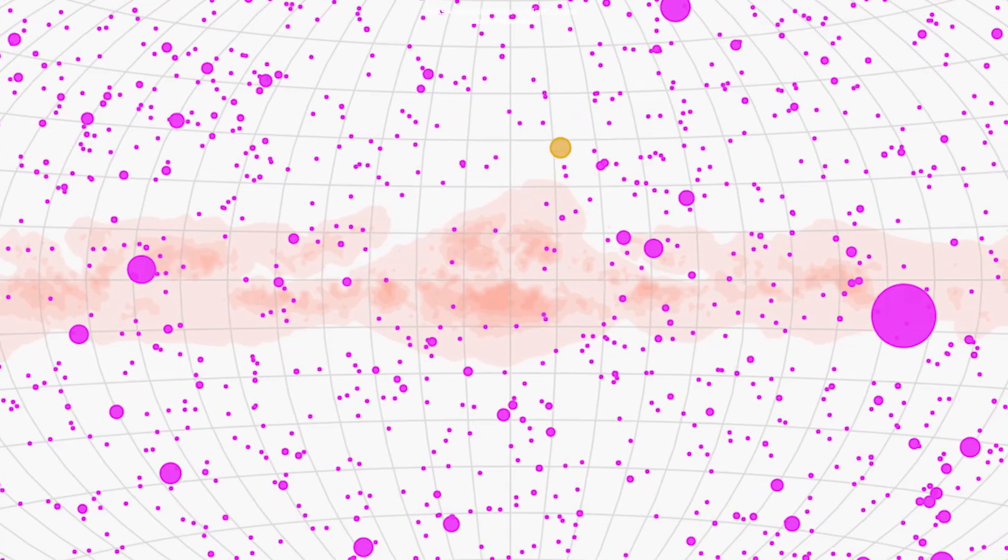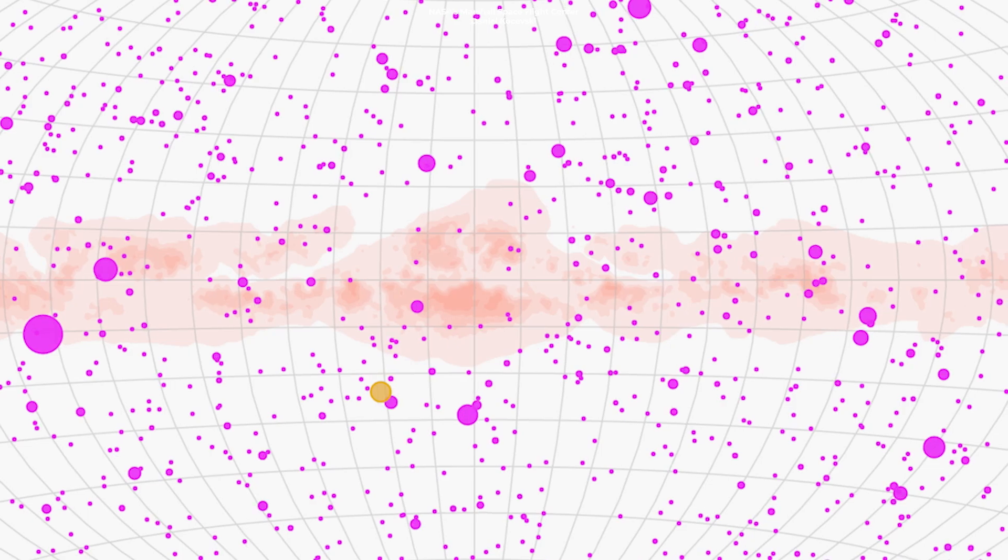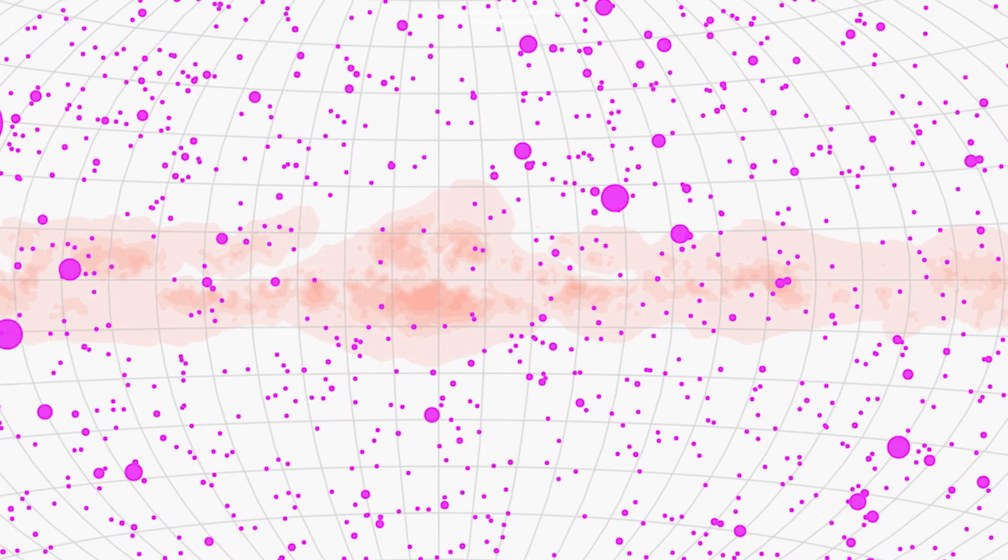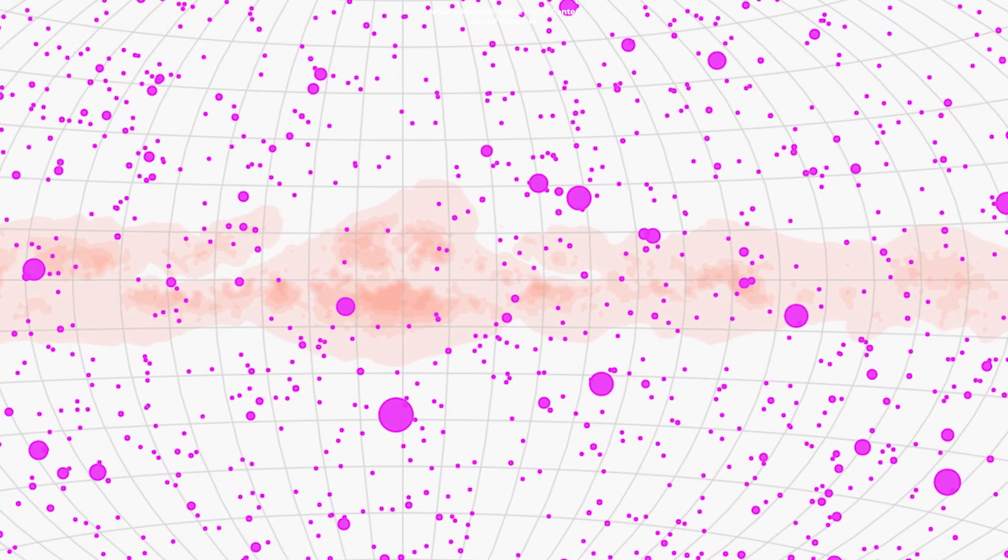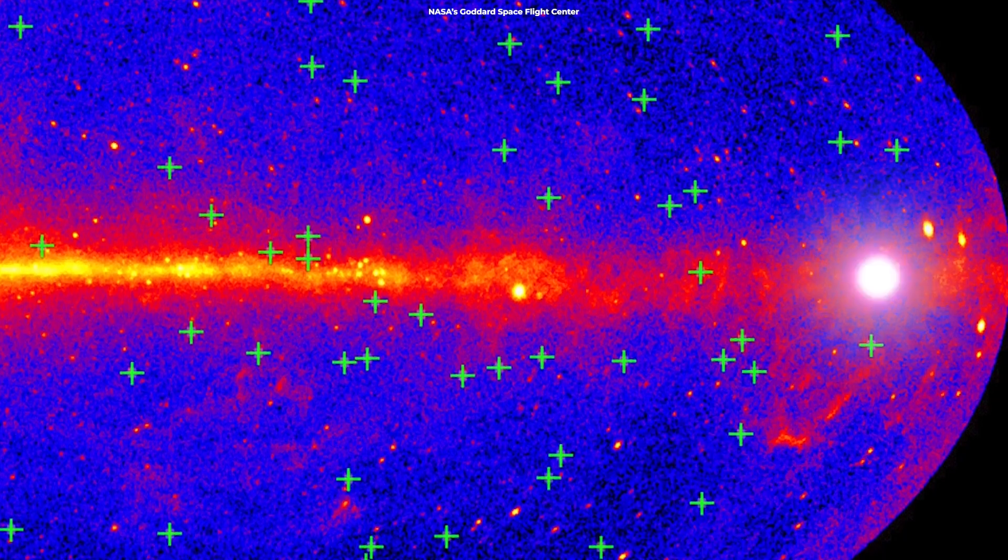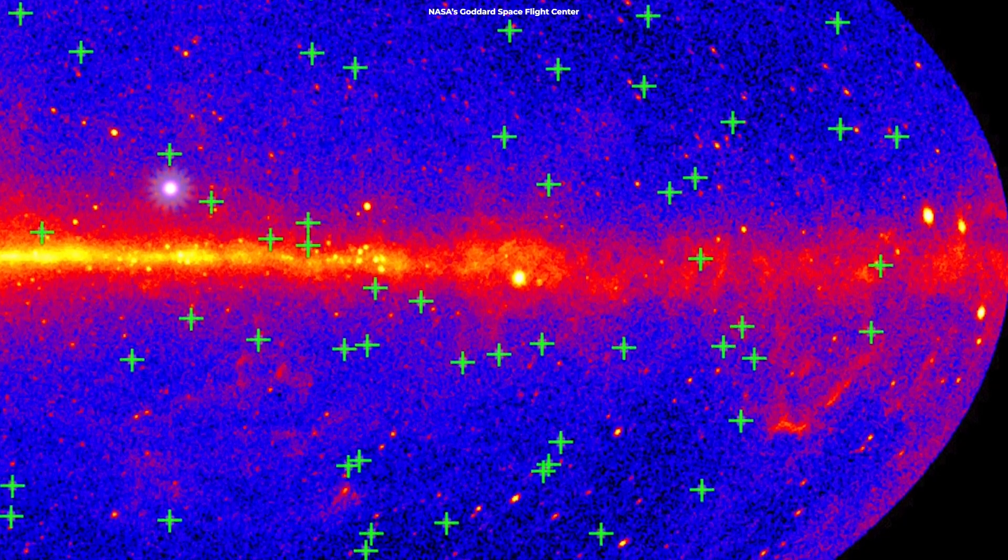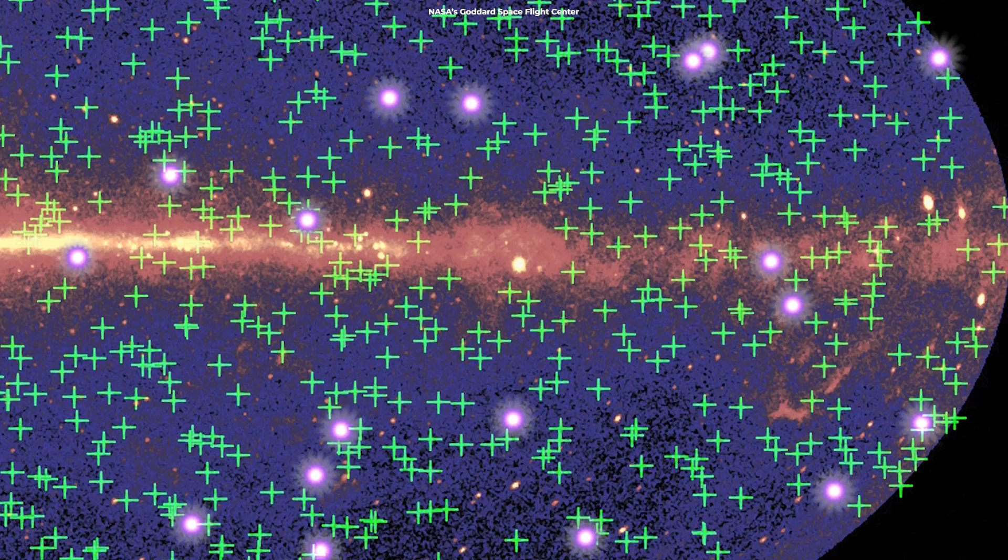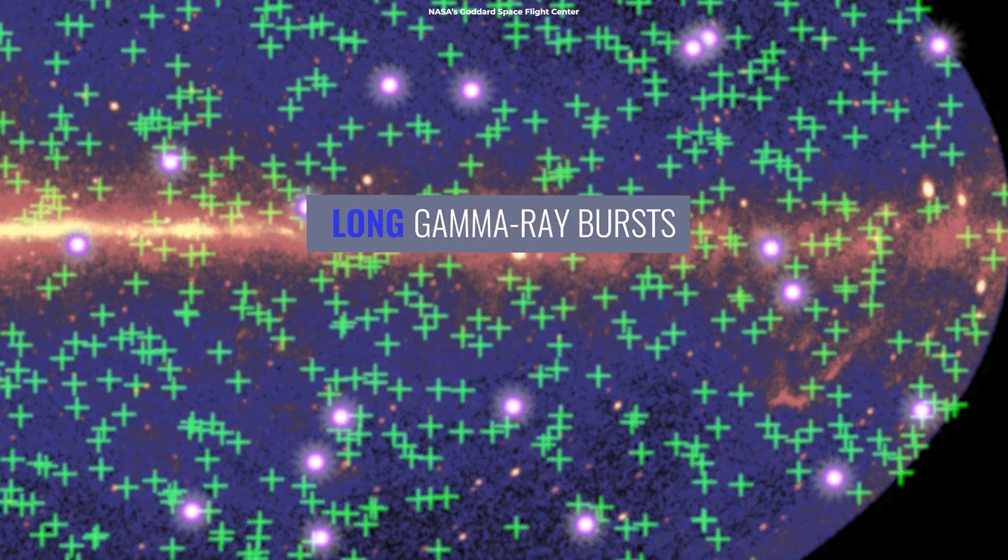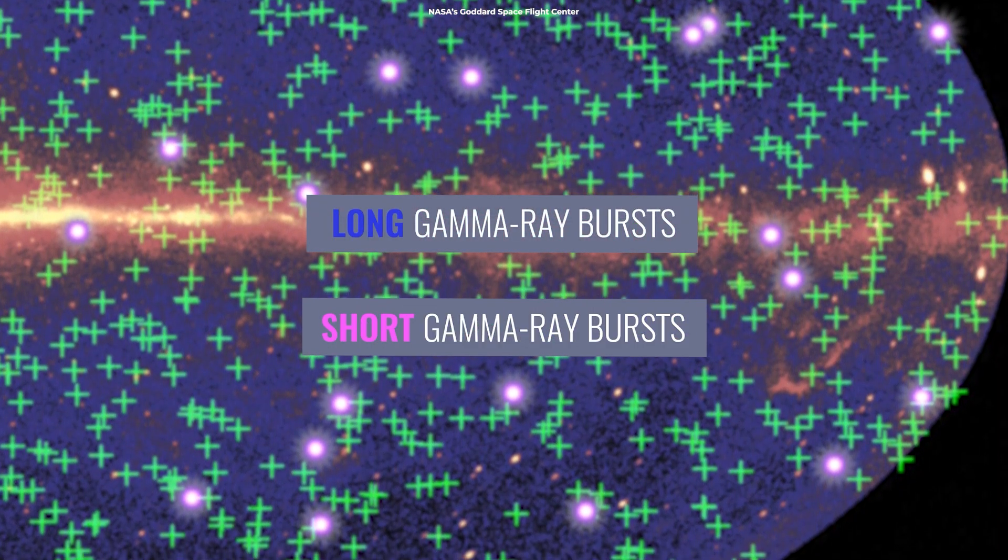GRBs are like the flash bulbs of the cosmic paparazzi, except they're snapping pictures of the universe's most dramatic events. They're incredibly intense, short-lived bursts of gamma-ray radiation, the highest energy form of light, and they come in two main flavors, long and short.